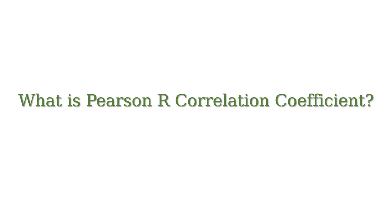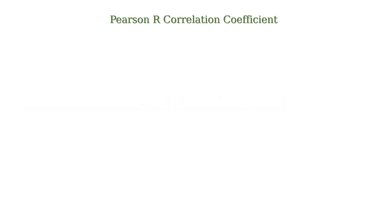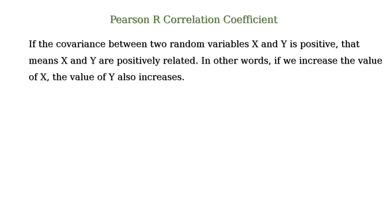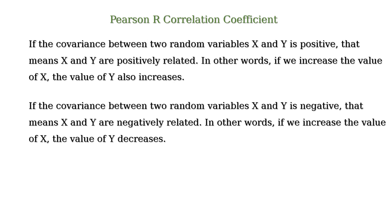In this video, we will discuss what correlation between two random variables x and y is. We discussed that if the covariance between two random variables x and y is positive, that means x and y are positively related. In other words, if we increase the value of x, the value of y also increases. And if the covariance between two random variables x and y is negative, that means x and y are negatively related.